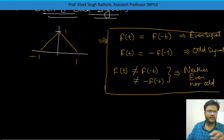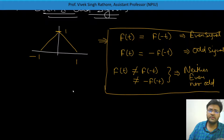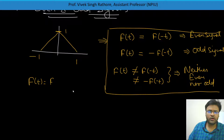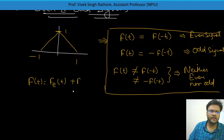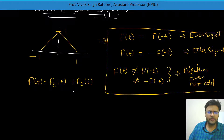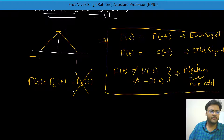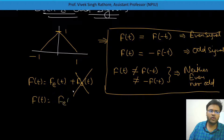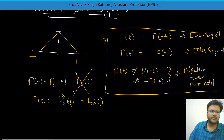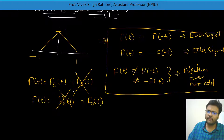Every signal in nature will generally consist of both parts — an even part F_e(t) and an odd part F_o(t). In an even signal, the odd part will be absolutely equal to zero, so F(t) equals F_e(t). And if your signal is only an odd signal, the even part will be absolutely zero, so only the odd component remains.